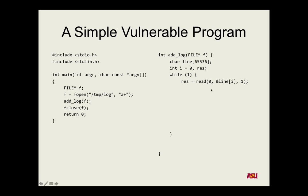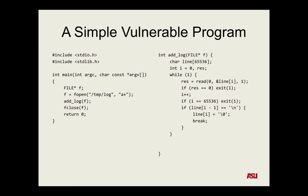Basically, read one byte from file descriptor zero — standard input — into this line buffer. Then if the result is zero, exit, which means end of file. Otherwise increment i. If we've reached the end of the buffer, then exit. And if the last thing we read was a newline, then exit this loop as well. So this will read in until we get to end of file or a newline character. We'll keep just reading in bytes. So custom input routine. If you step through this, you can guarantee there's no possible overflow. The most bytes that will be read is 65,536, which is the size of the buffer. No overflow and no off-by-one errors.